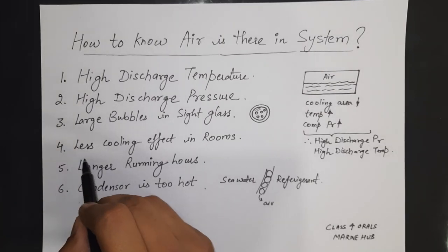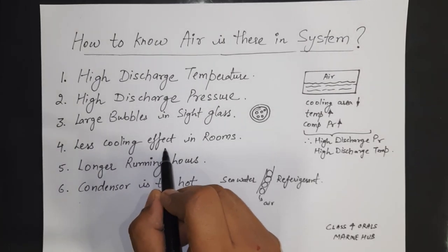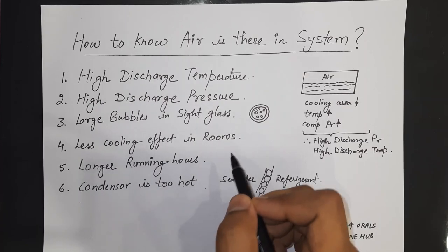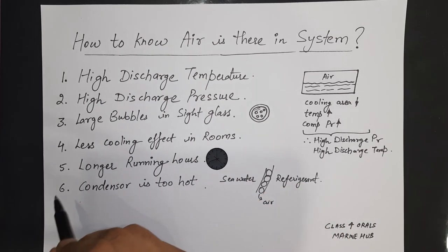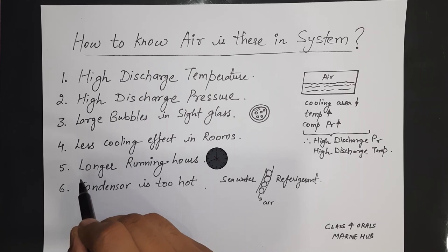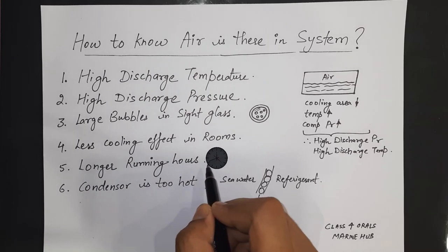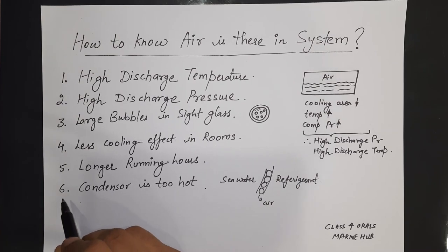Fourth, there would be less cooling effect in the rooms — the vegetable room, meat room, or the fish room. Fifth, there would be longer running hours of the compressor.